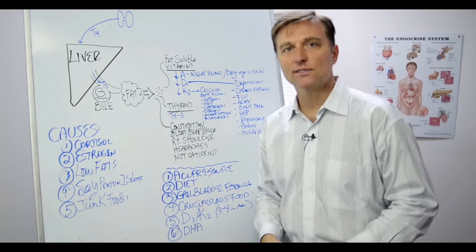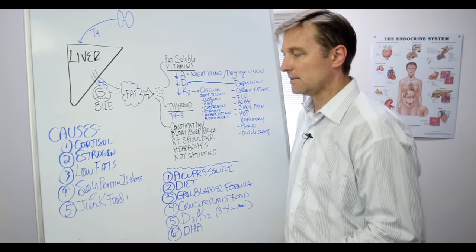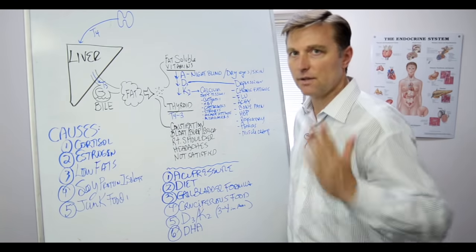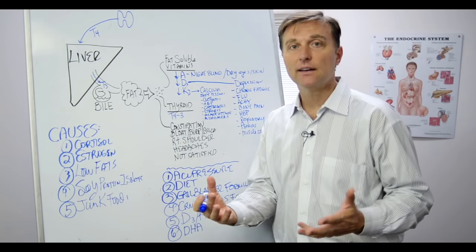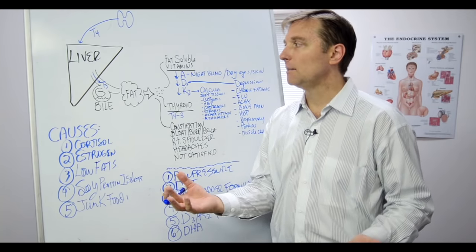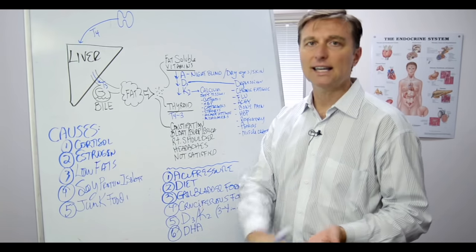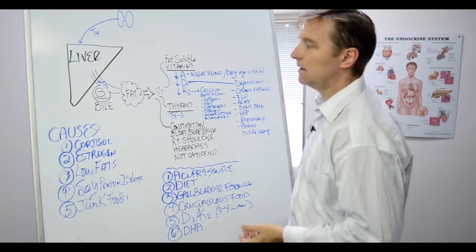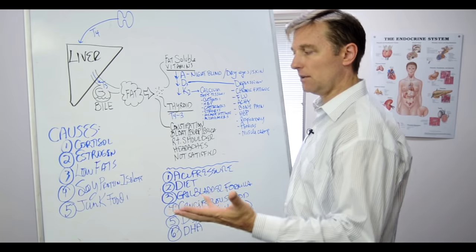Low fat diets will cause gallbladder problems. So, you know, vegetarians that go off all saturated fats. Well, then there's nothing to trigger the gallbladder. So it dries up. So you don't have any bile and you can't digest fat. So that's why a lot of vegetarians have dry skin. They're just dry inside and out. It's because of low fat. So we want to increase the healthy fats.